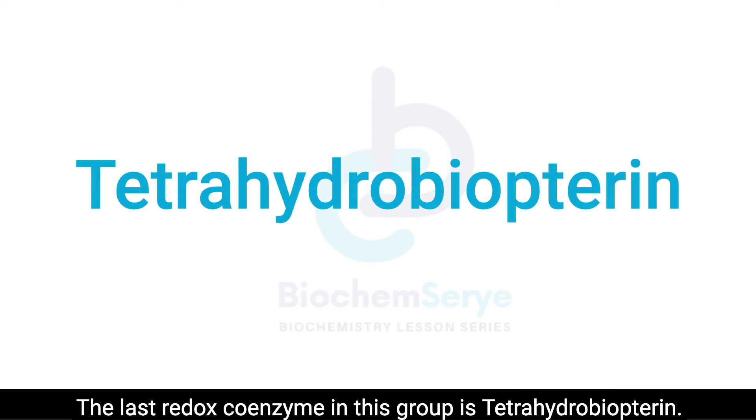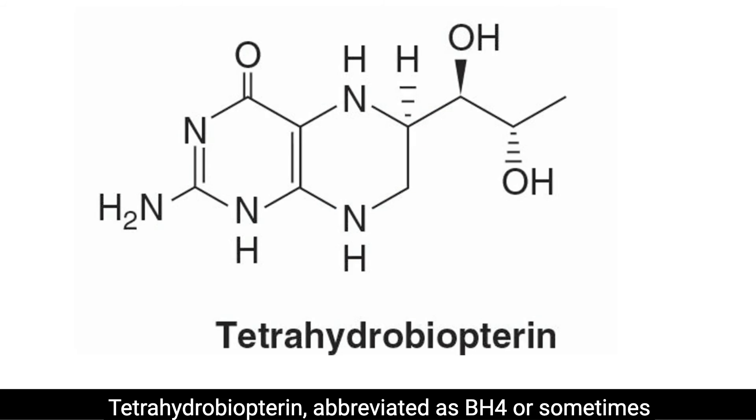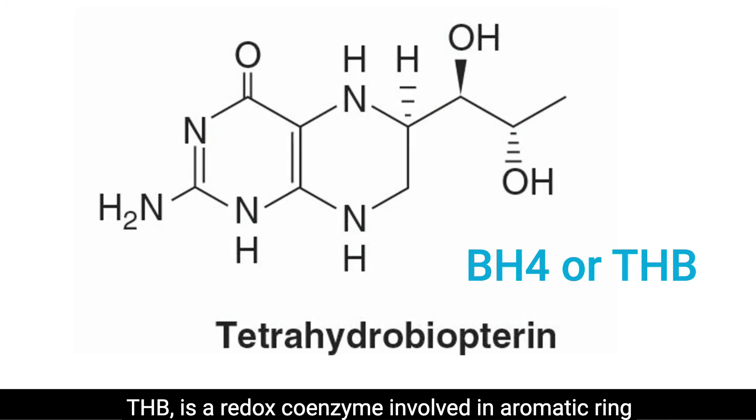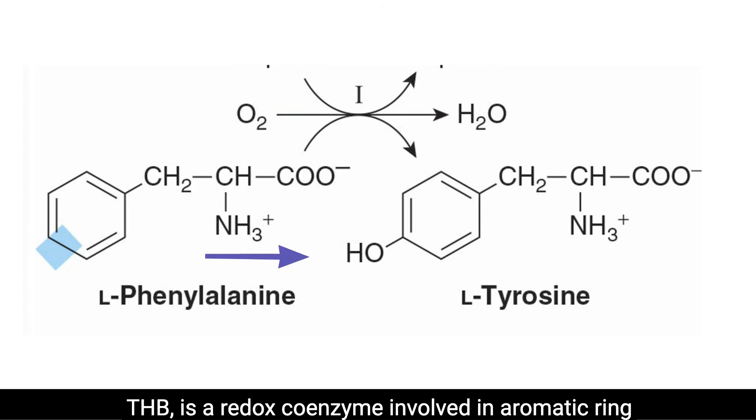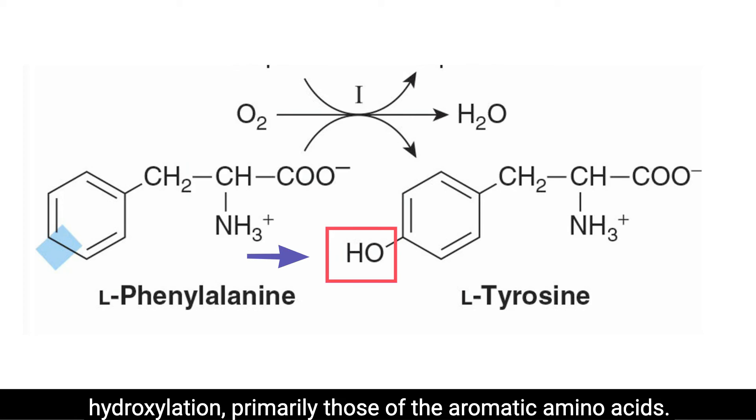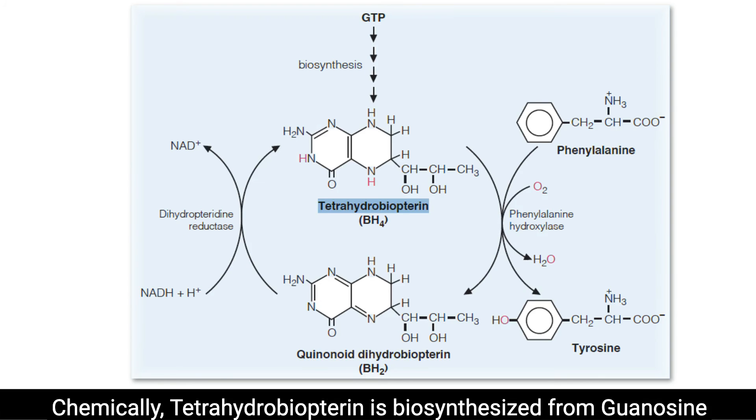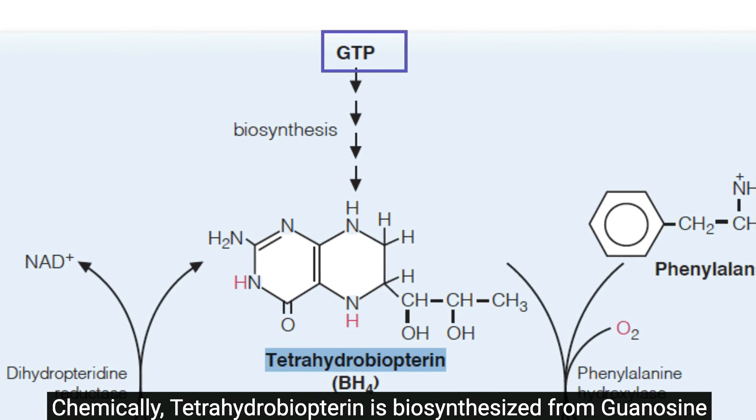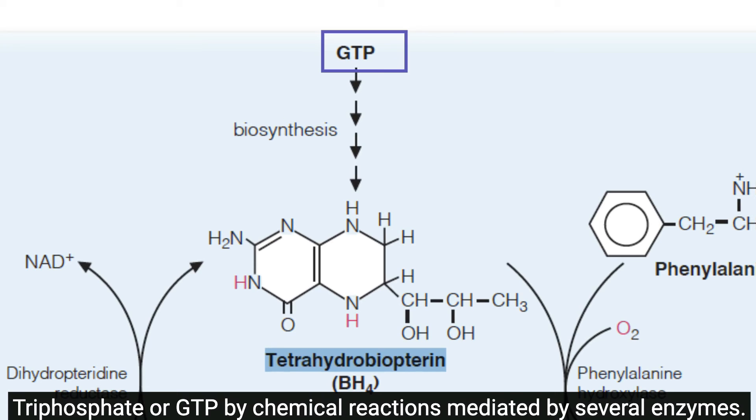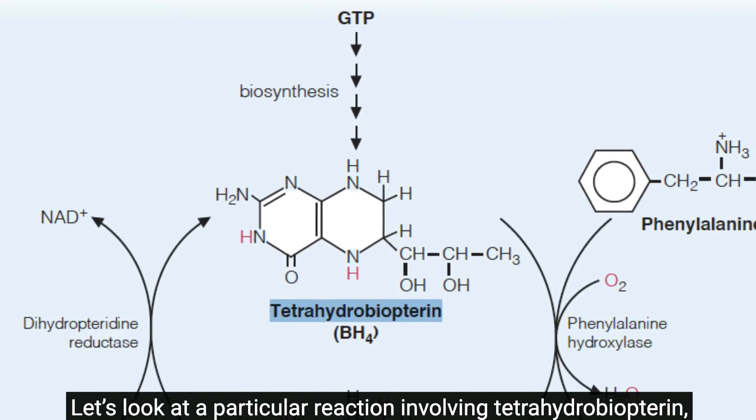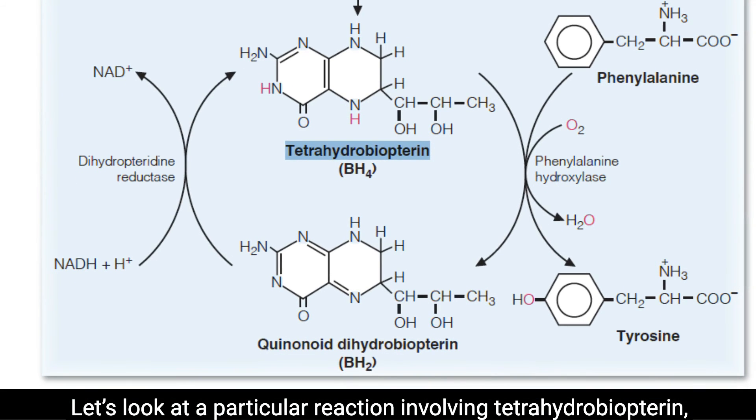The last redox coenzyme in this group is tetrahydrobiopterin. Tetrahydrobiopterin, abbreviated as BH4 or sometimes THB, is a redox coenzyme involved in aromatic ring hydroxylation, primarily those of the aromatic amino acids. Chemically, tetrahydrobiopterin is biosynthesized from guanosine triphosphate or GTP by chemical reactions mediated by several enzymes.